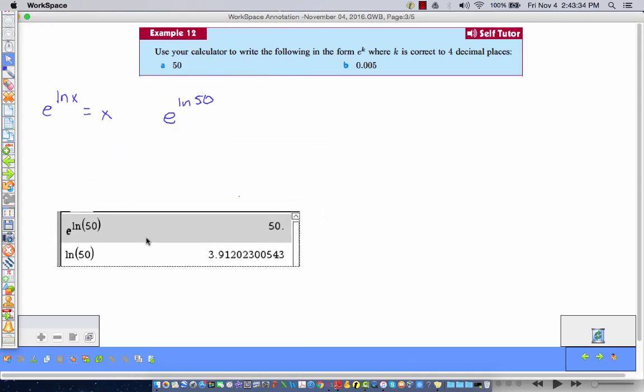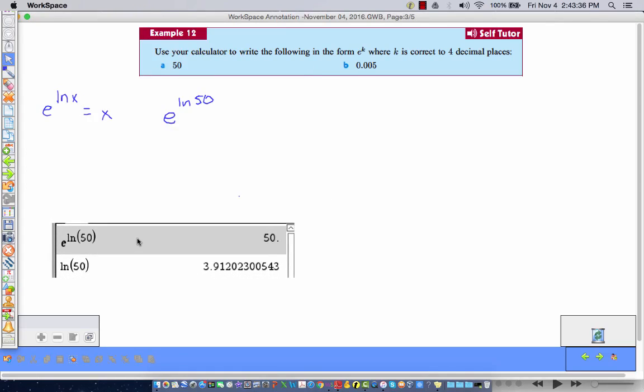And we'll slap it on our whiteboard there. And so I can say that E to the natural log of 50, and they wanted it in the form of E to the K, is equal to E to the, well, this is approximately equal to because I can't write that's an infinite number of decimal places. So that would be 3.9, 1, 2, 0. So that is two, five, four decimal places.